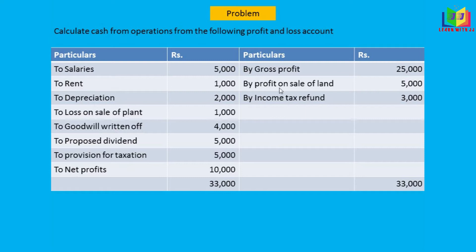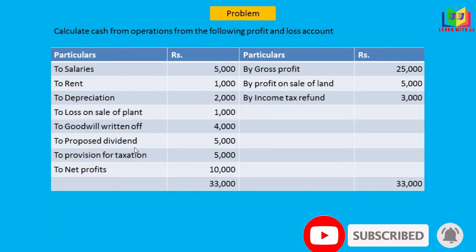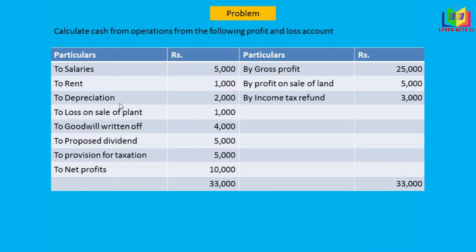The P&L account also shows net profit, gross profit, profit on sale of land, and income tax refund. From this account we will take only the non-operating expenses and incomes — that is, items not related to the operation of the business. The non-operating expenses are: depreciation, loss on sale of plant, goodwill written off, proposed dividend, and provision for taxation. The non-operating incomes are: profit on sale of land and income tax refund. Salary and rent are operating expenses and have no place in this cash flow calculation.